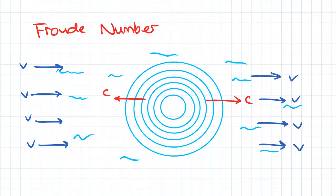So first looking at the Froude number, in the previous video we defined the speed of a surface wave as c equal to square root gy.